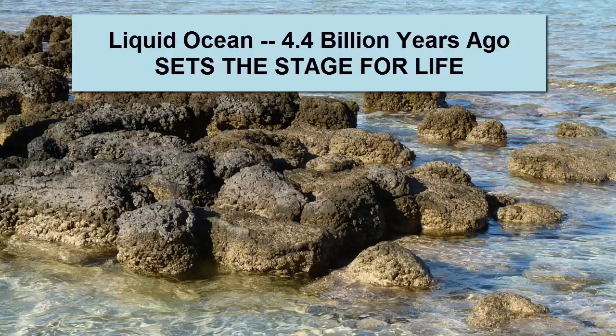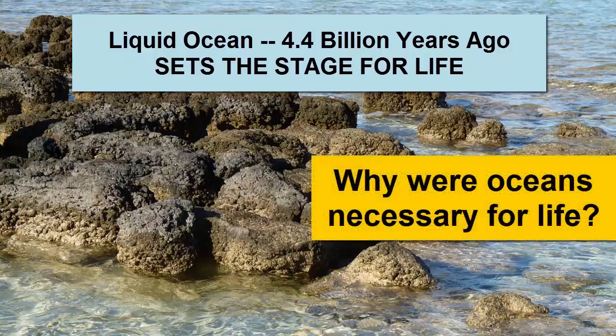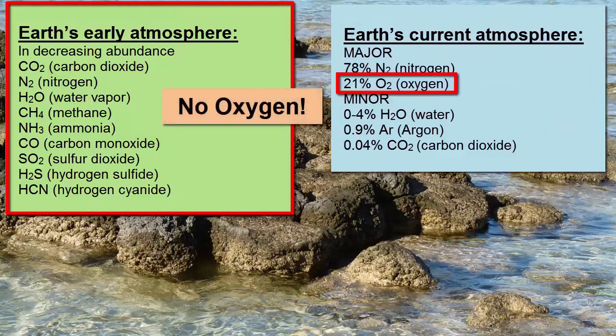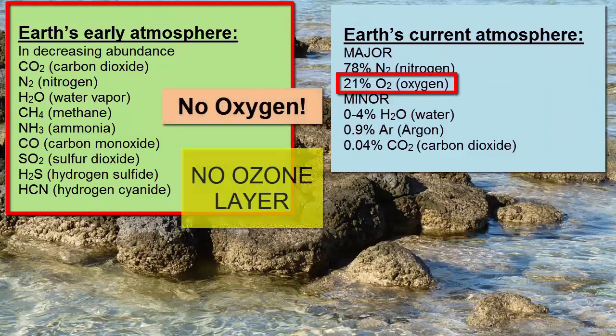With a liquid ocean layer present on Earth's surface 4.4 billion years ago, the stage was set for the earliest life to evolve. Why were oceans necessary for life? Early Earth had no oxygen in its atmosphere, which means it also had no ozone layer. Ultraviolet radiation from the sun readily reached the surface and would have irreparably damaged any biological material.